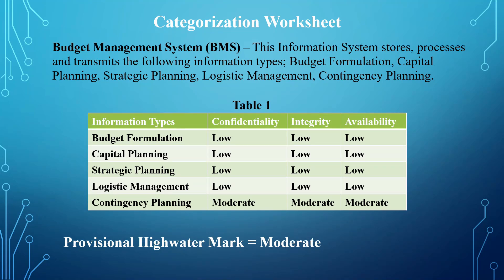The next thing we are going to do is determine the highest impact level to each of the security objectives, which is the high watermark. The high watermark is the highest impact level to the security objectives. Looking at confidentiality: budget formulation is low, capital planning is low, strategic planning is low, logistic management is low, and contingency planning is moderate.